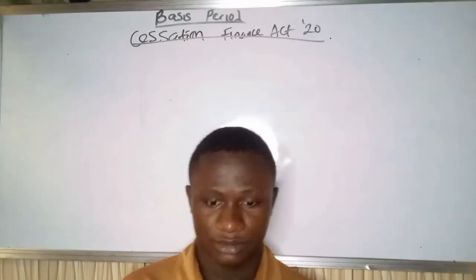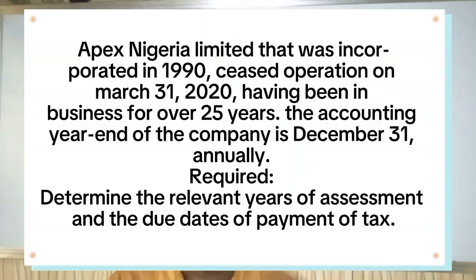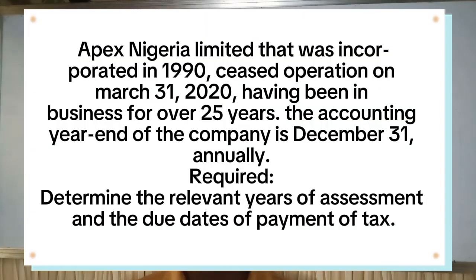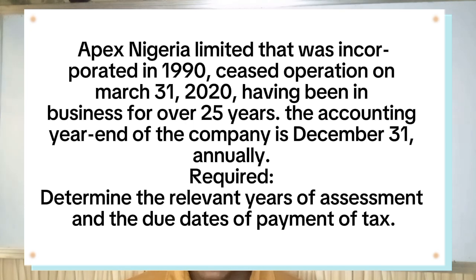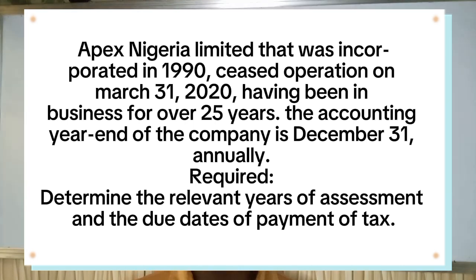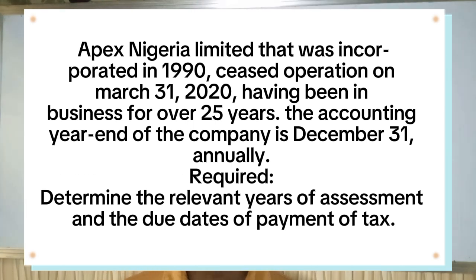From what we have here, Apex Nigeria Limited was incorporated in 1990 and ceased operation on March 31st, 2020, having been in business for over 25 years. The accounting year of the company is December 31st annually. We are required to determine the relevant years of assessment and the due date of payment of tax.